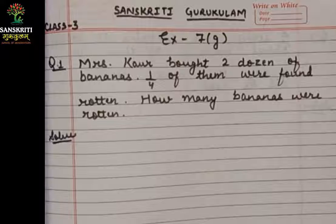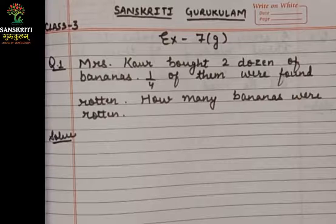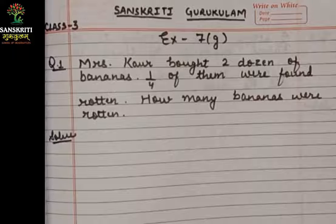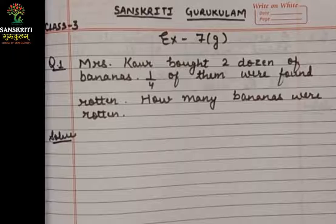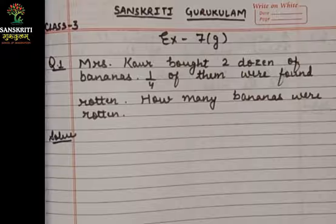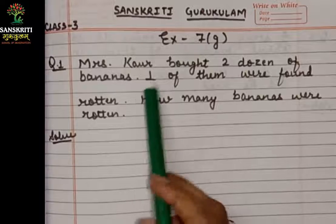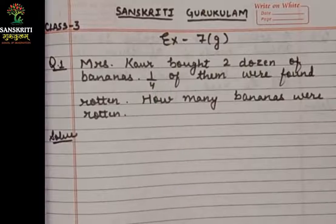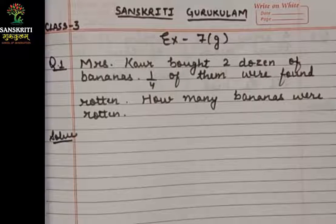Mrs. Kaur bought 2 dozen bananas. One fourth of them were found rotten. So how many bananas were rotten? This is a fraction problem. Let's find out how many bananas were rotten. We will write and solve it.